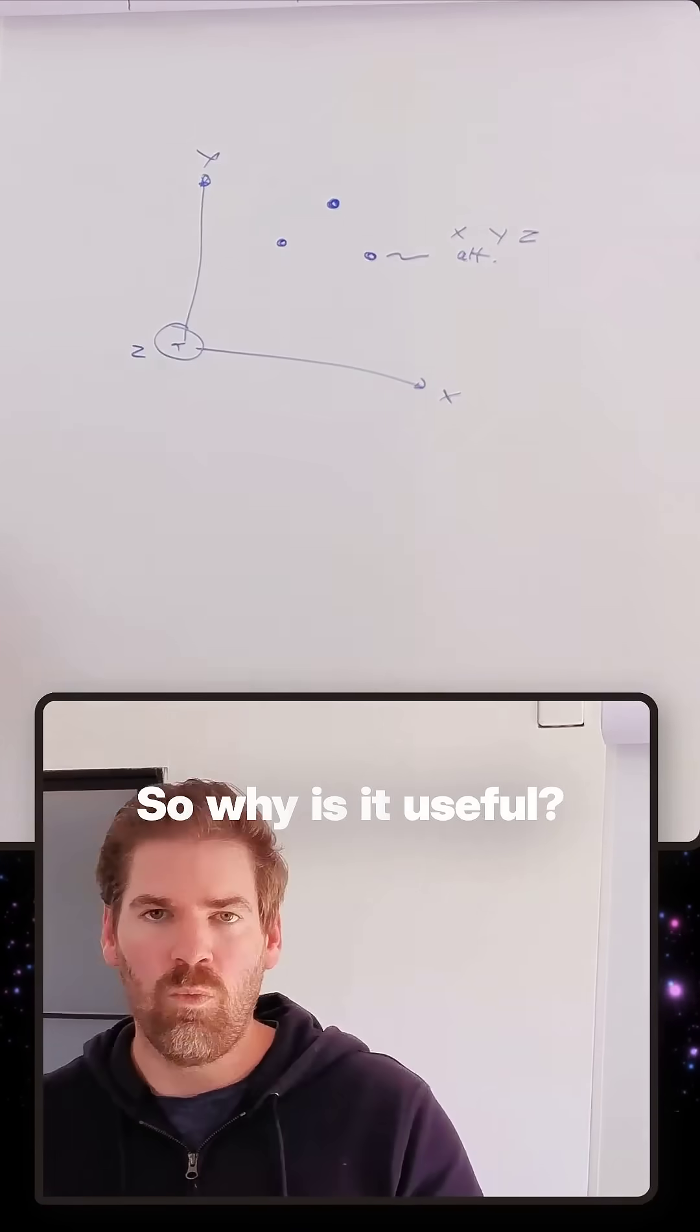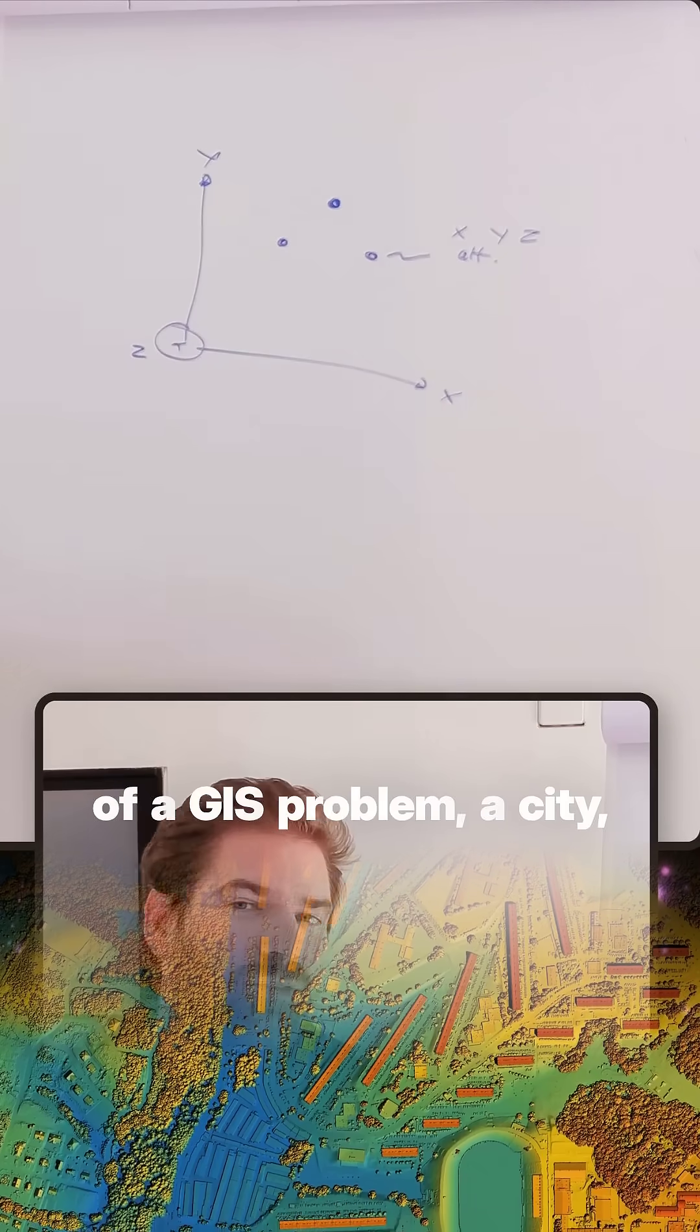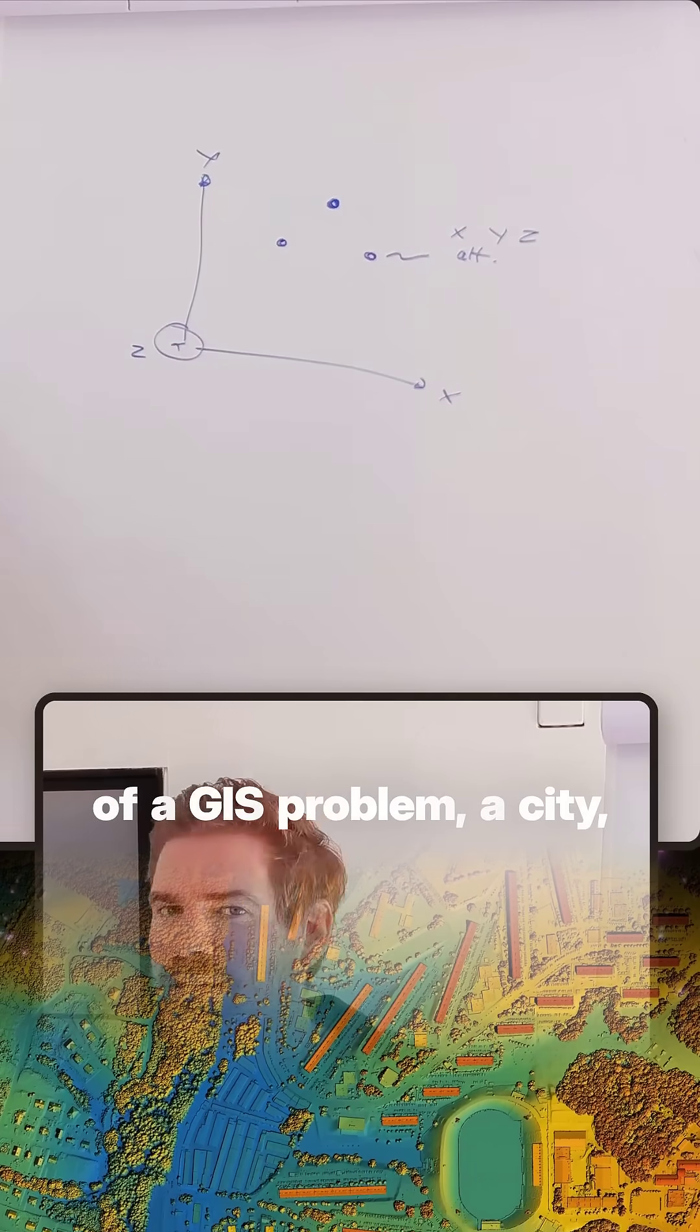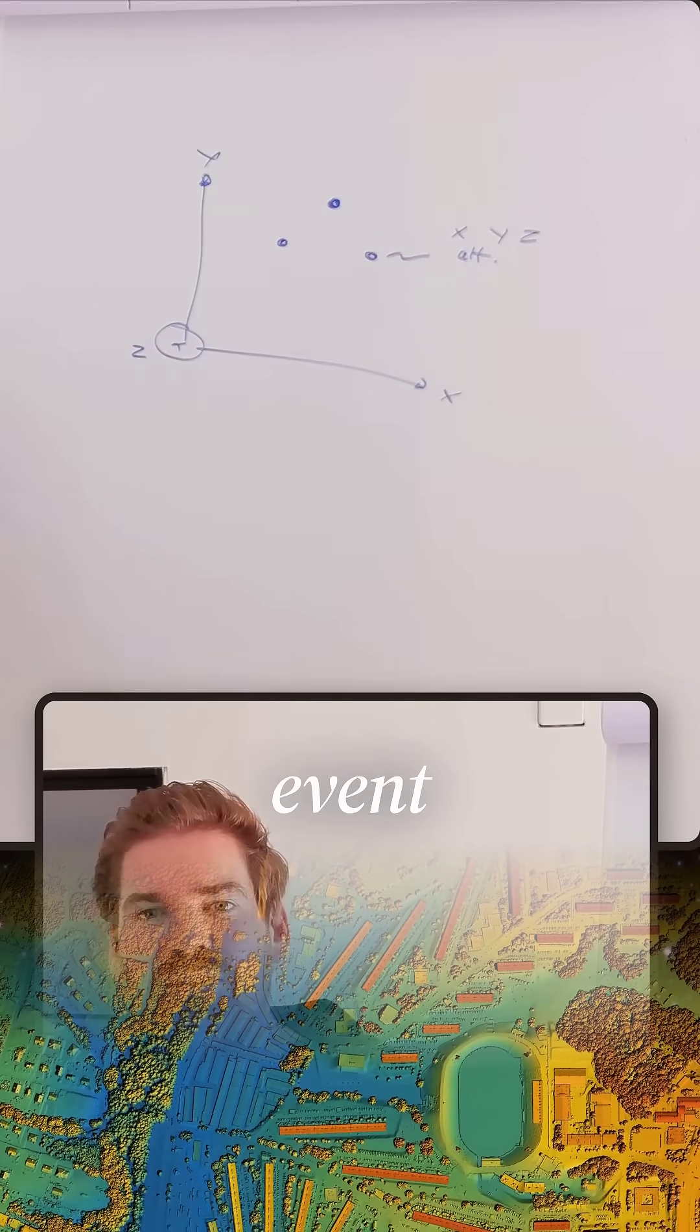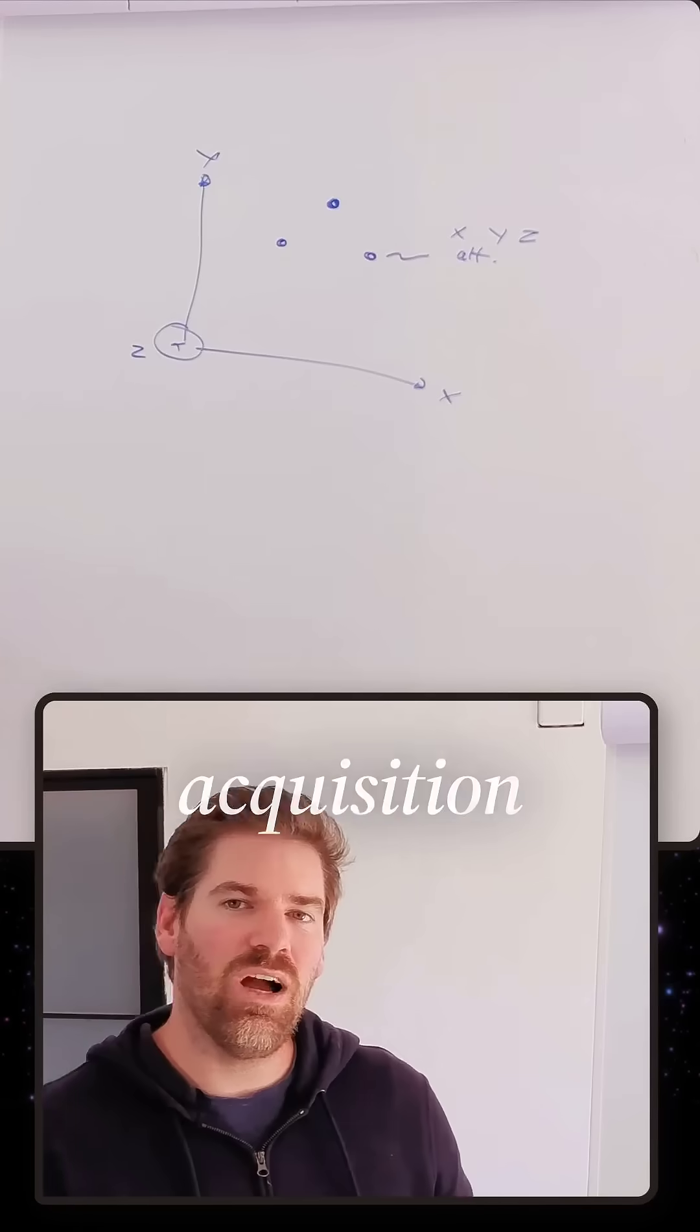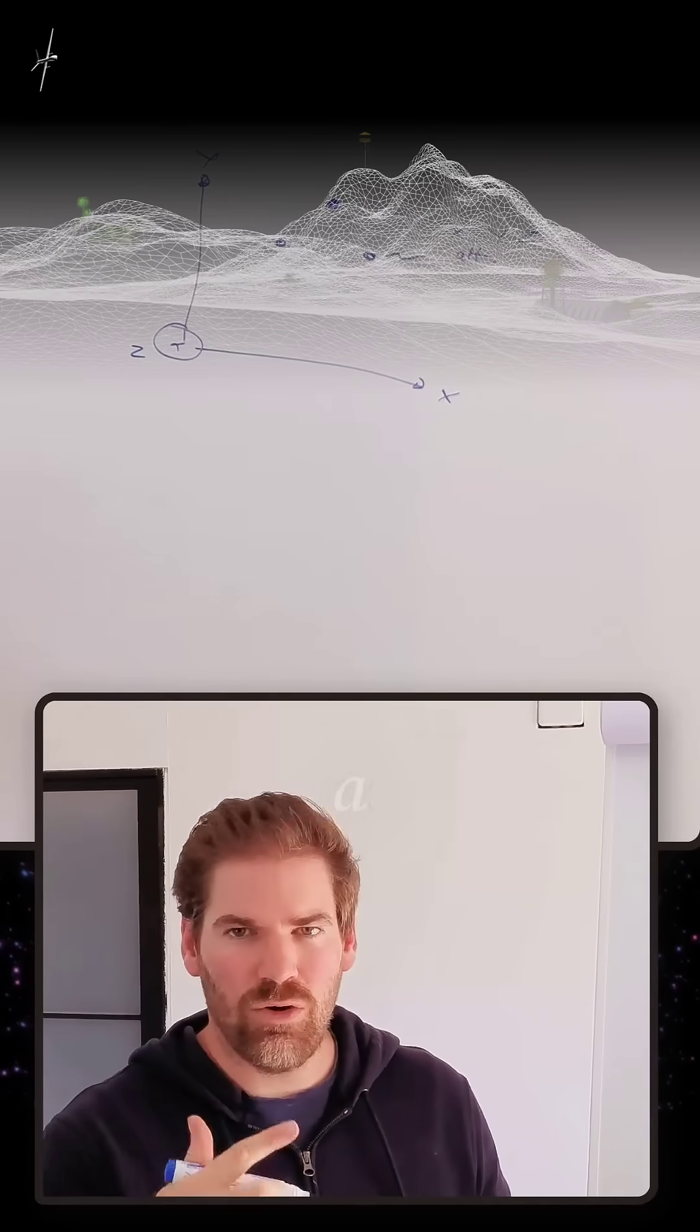So why is it useful? Because you can pretty much represent anything with a point. This can be in the context of a GIS problem, a city or a country or a specific event that happens. In the context of data acquisition that we do with LiDAR, photogrammetry, laser scanner, it usually will describe a piece of a surface.